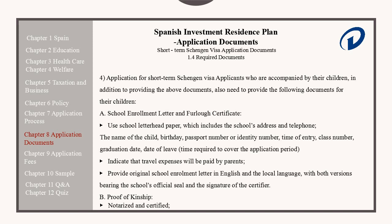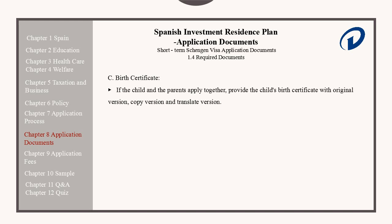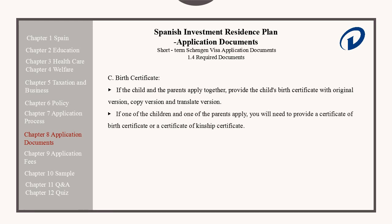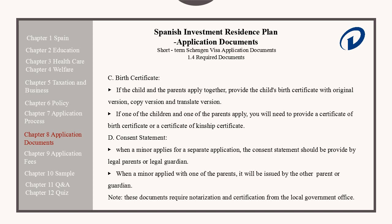They should also provide proof of kinship that is notarized and certified. A birth certificate must also be provided if the child and the parents apply together — the original, copy, and translated versions should all be provided. If one of the children applies with only one parent, you will need to provide a certificate of birth and a certificate of kinship. Consent statements: when a minor applies for a separate application, the consent statement should be provided by the legal parent or legal guardian. When a minor applies with just one of the parents, it will be issued by the other parent or guardian. Please note, these documents require notarization and certification from the local government office.